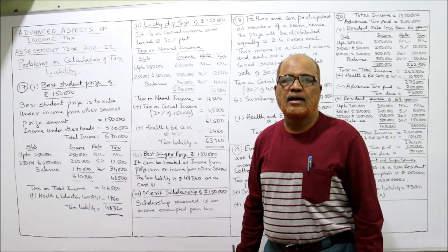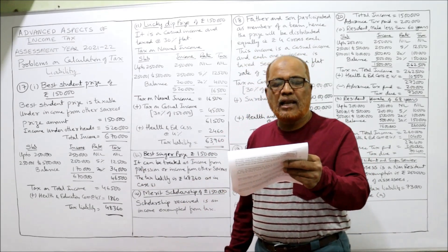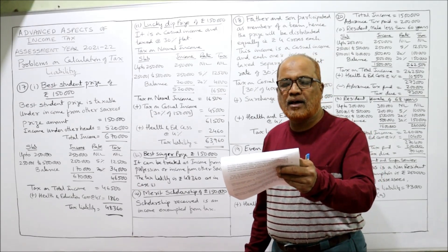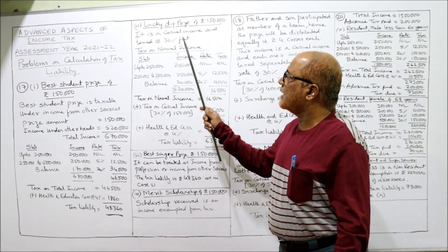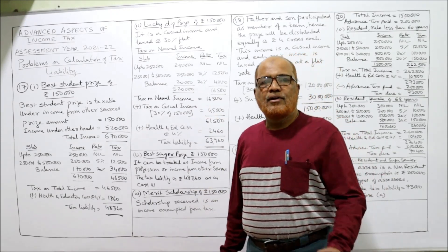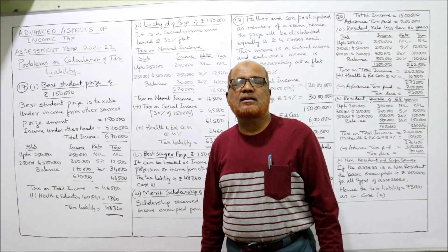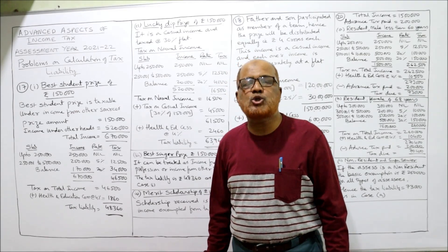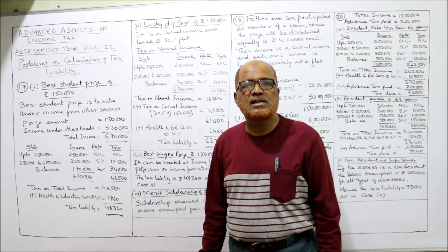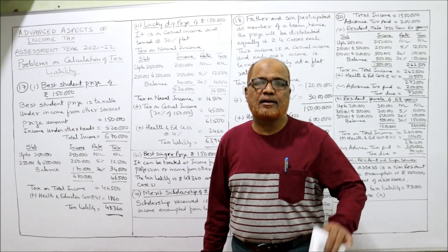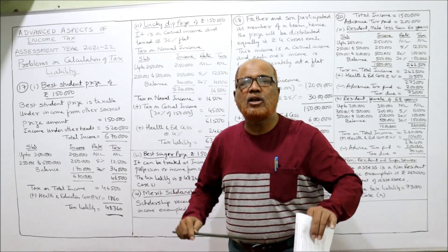Second case: lucky student in a lucky dip prize. When a student receives a lucky dip prize, the Income Tax Act says it is a casual income. Casual income is taxed at a flat rate of thirty percent separately — it will not be included in normal income. We keep normal income and casual income separate.